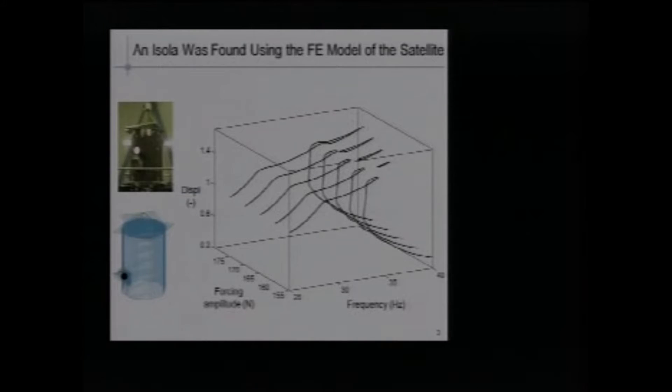While playing with the model, we found what we call an isola, an isolated resonance curve. Here you see a 3D plot showing the frequency responses of this satellite. This is the finite element model with the nonlinear device. You see frequency, forcing amplitude and displacement are dimensionalized. At some forcing amplitude, you see the creation of an isolated resonance curve that you can miss easily during computation or experiment. The problem is that these isolated resonance curves may attach to the main branch.